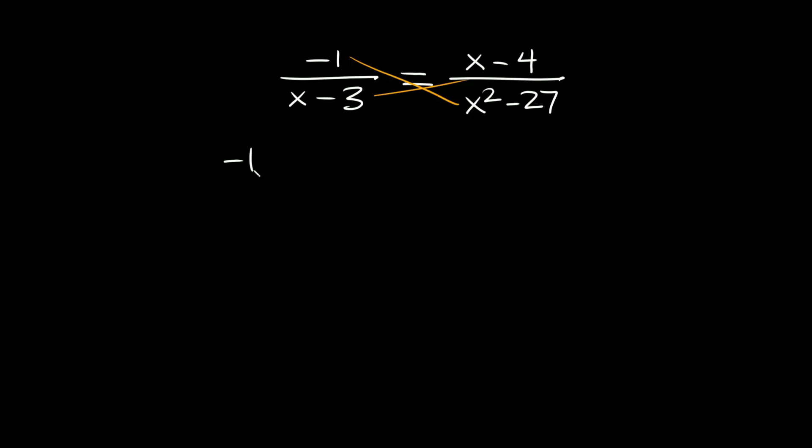First we have negative 1 times x squared minus 27, and that equals our other cross over here. So x minus 3 times x minus 4.